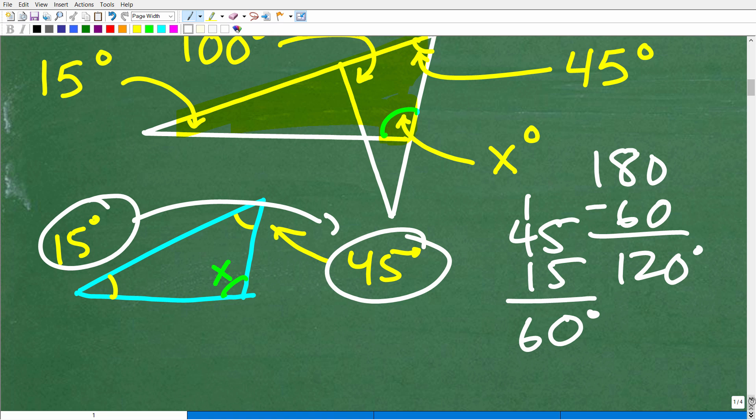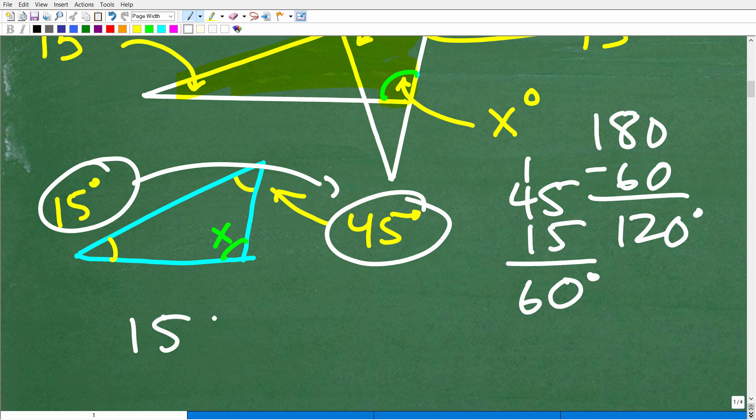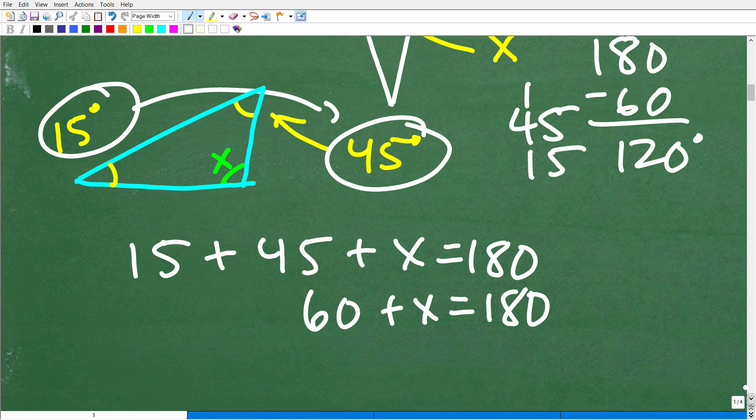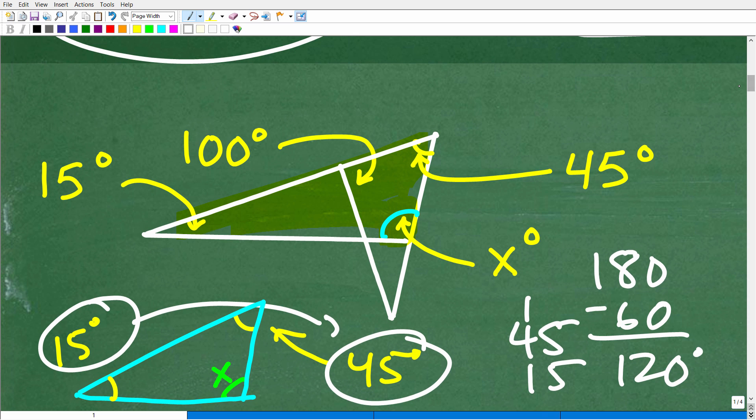Now, if I wanted to get fancy, I could use algebra. I could say 15 plus 45 plus X is equal to 180 degrees. And that's not a bad approach as well. And of course, I could just solve this basic equation. 15 and 45 is 60 plus X is equal to 180 degrees. Then I can subtract 60 from both sides of the equation. So X will be equal to 120 degrees. All right. So this is by far the easiest and most direct approach to solve this problem.